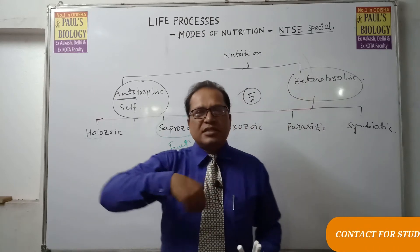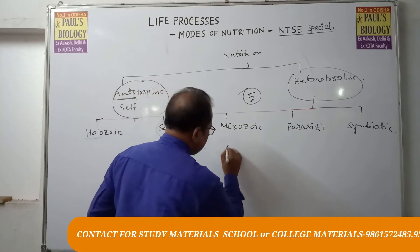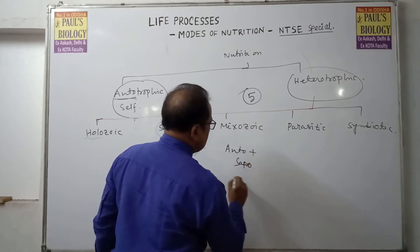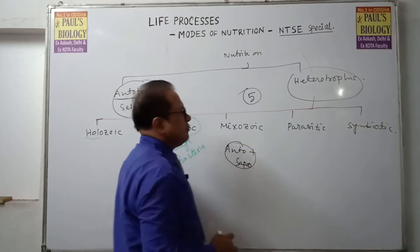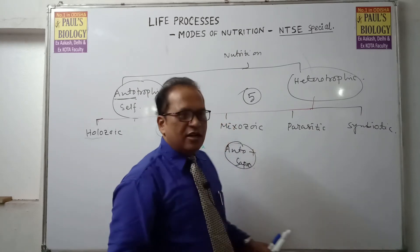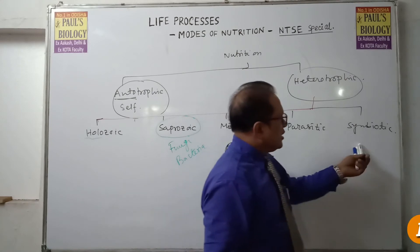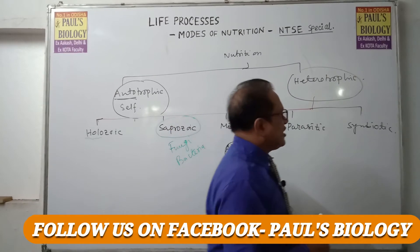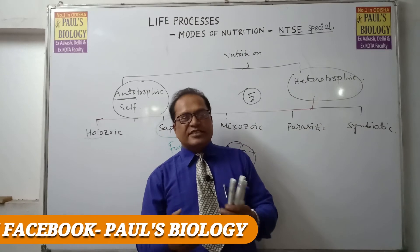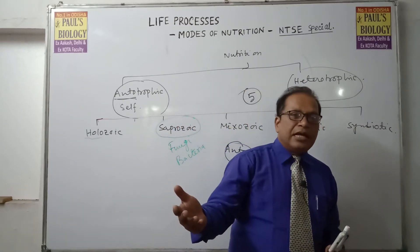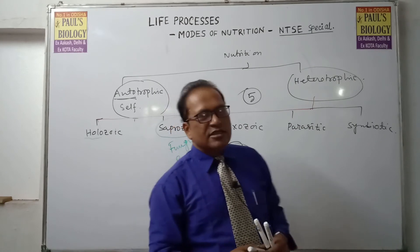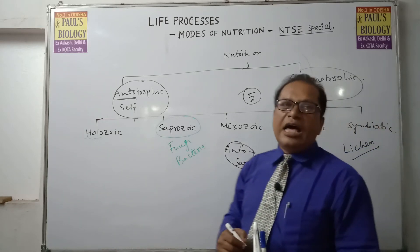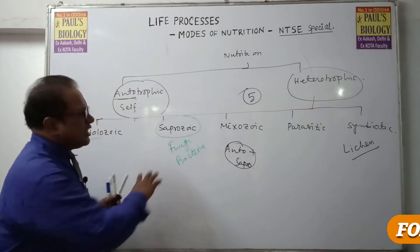Next is mixozoic — mix means this is autotrophic plus saprozoic, that is auto plus hetero combined. That is mixozoic. Parasitic means they live on other organisms; the parasite may be ectoparasite or endoparasite. Symbiotic means both organisms are benefited — it is give and take. For example, lichen: lichen contains algae and fungi, and here both are benefited. Questions in NTSC can come from symbiotic nutrition, especially on lichen.